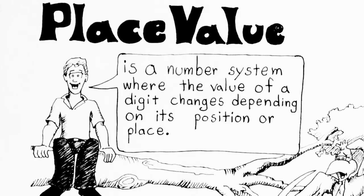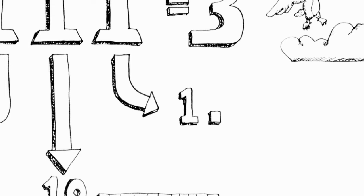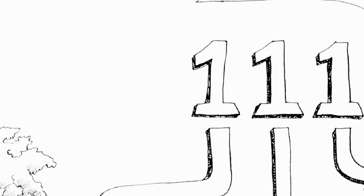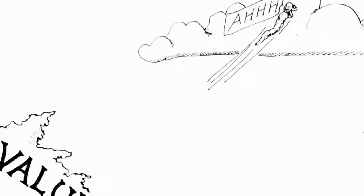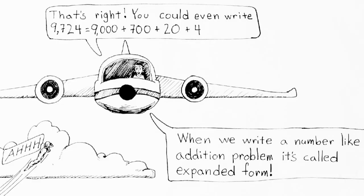So going back to our original definition: place value is a number system where the value of a digit changes depending on its position or place. We saw that if we put a one in the ones place, it's only equal to one thing. When we move the one to the tens place, it becomes one group of ten. If we move it to the hundreds place, it becomes one group of a hundred. If we move it to the thousands place, it becomes one group of a thousand. And if we move the one to the ten-thousands place, it becomes one group of ten thousand. Sometimes it's good to write numbers like an addition problem, and when we do that it's called expanded form, because we can see how much each one of those digits is really worth.